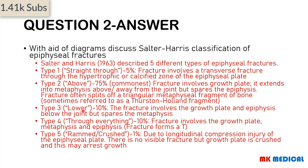Type 3 accounts for 10%: the fracture involves the growth plate and epiphyseal plate below the joint, sparing the metaphysis. Type 4 also accounts for 10%: the fracture involves the growth plate, metaphysis, and epiphysis, forming a T shape — hence 'through everything.' Type 5 is the least common at 1%, caused by longitudinal compression injuries of the epiphyseal plate, with possibly no visible fracture; it is often a retrospective diagnosis when growth arrest occurs.